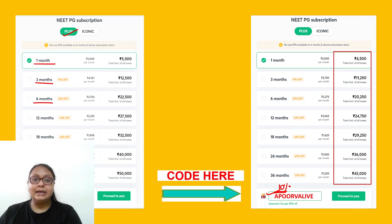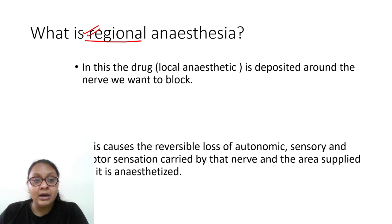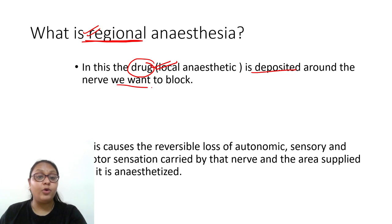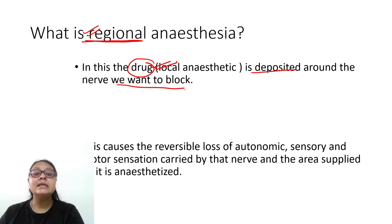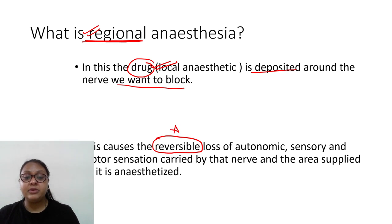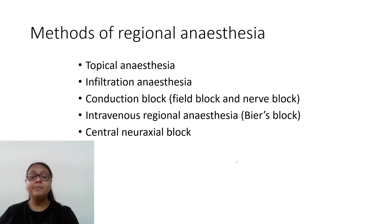Now let's start today's topic — anatomy of the spinal cord. First, let me introduce regional anesthesia. Regional anesthesia means blocking a region. The drug used is a local anesthetic, deposited around the nerve we want to block. For example, for shoulder surgery, I can block the upper and middle cord of the brachial plexus. It involves reversible loss of autonomic, sensory, and motor sensation carried by that nerve, and the area supplied by it is anesthetized.